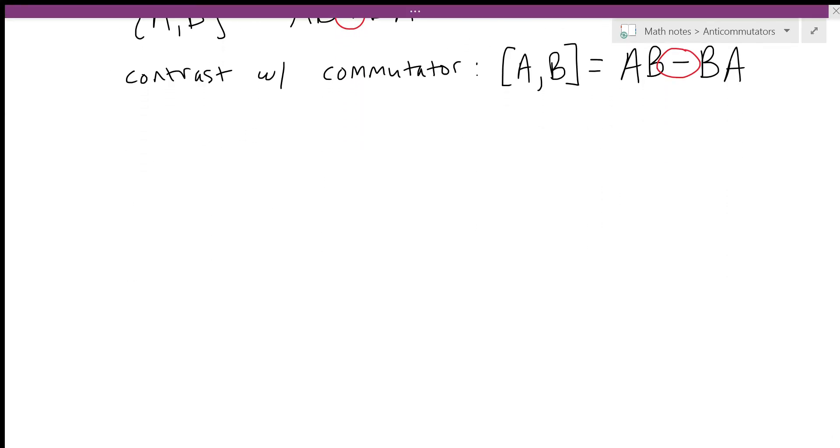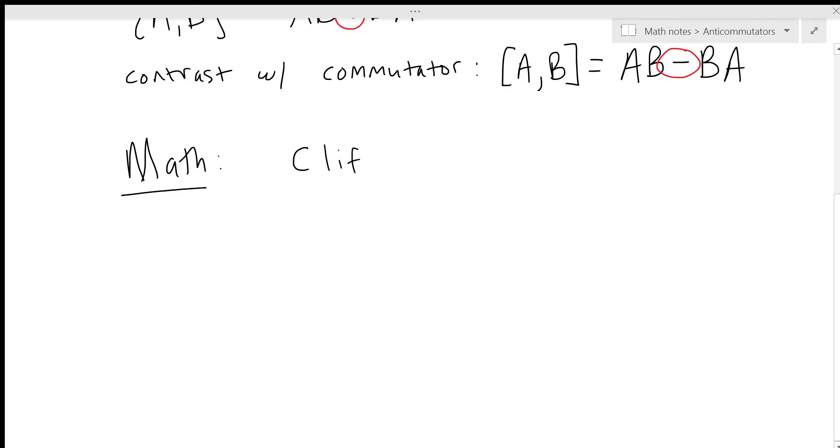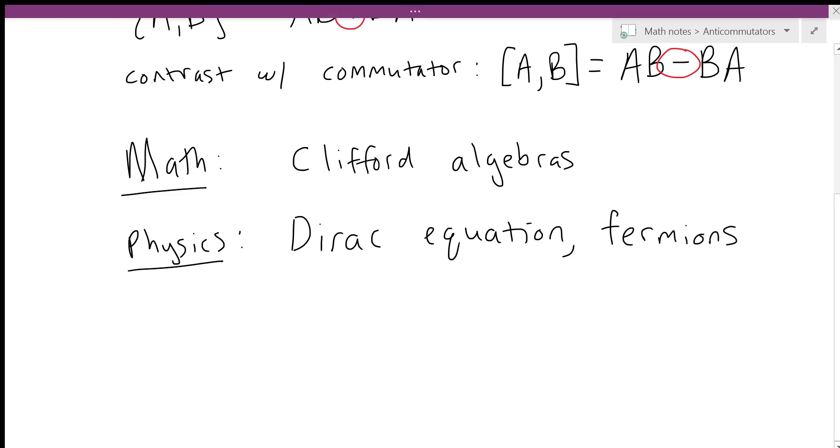Where in math and physics do you encounter anticommutators? In math, one of the main areas is Clifford algebras. In physics, many examples are related to Clifford algebras, and you find anticommutators in the Dirac equation and more generally any time you're dealing with fermions, which are a type of elementary particle.